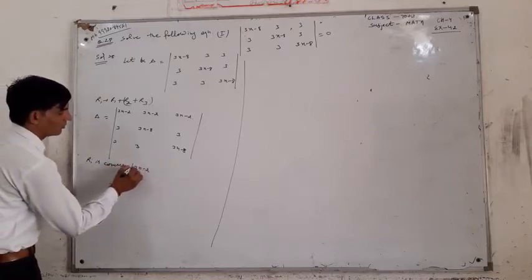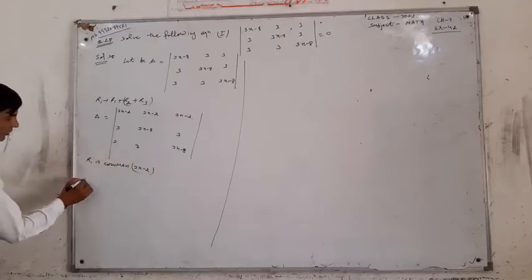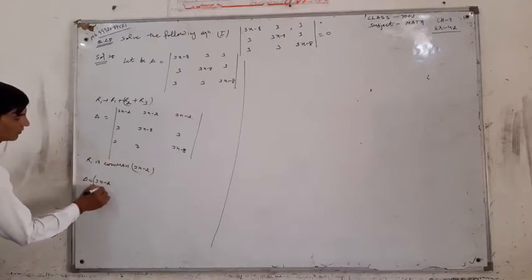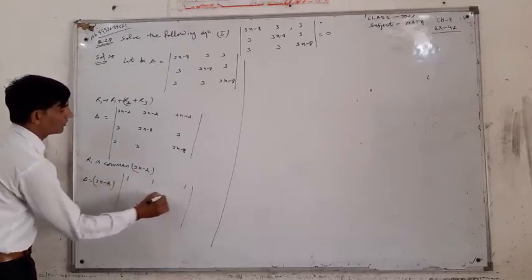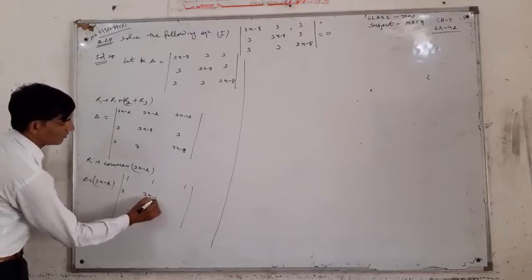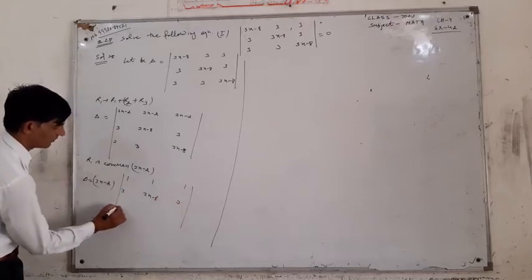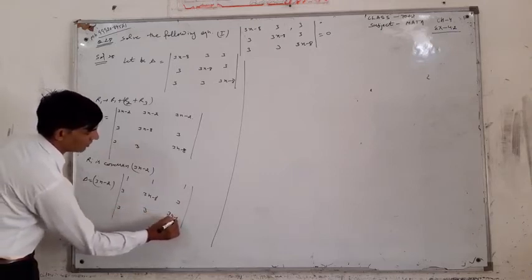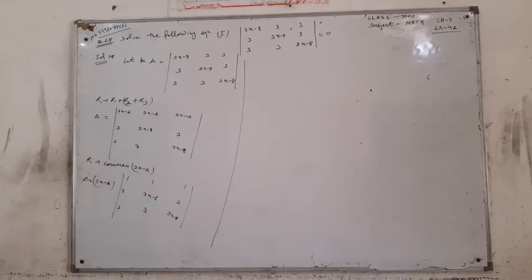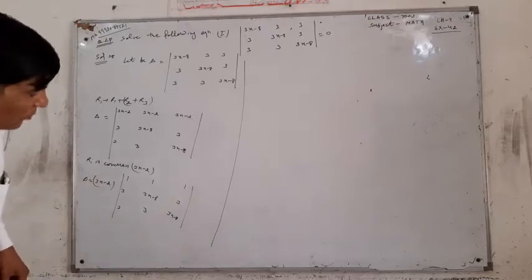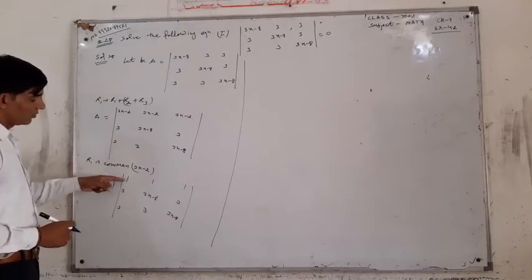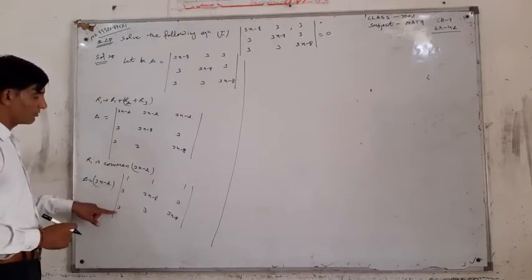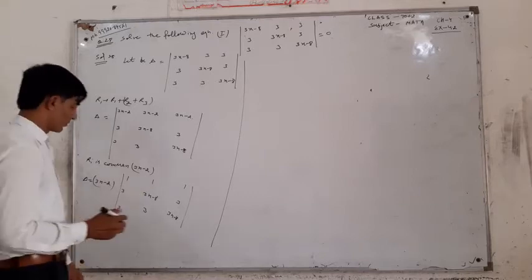3x-2. Then 1, 1, 1, 3, 3x-8, 3, 3, 3, 3x-8. Now, 2x-0. Now, 2x-0, 1x-0. 1x-0, 2x-0. 1x-0.